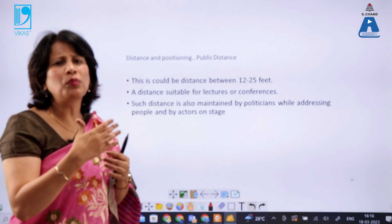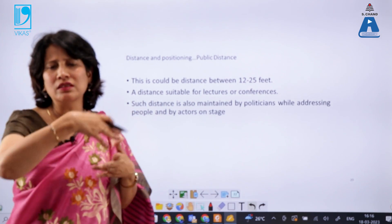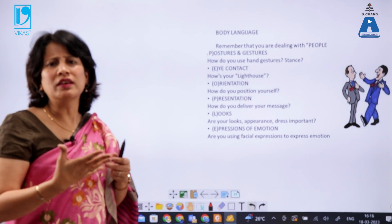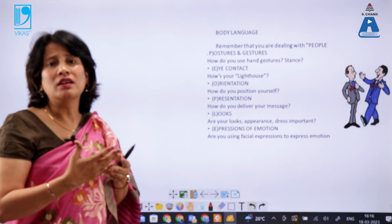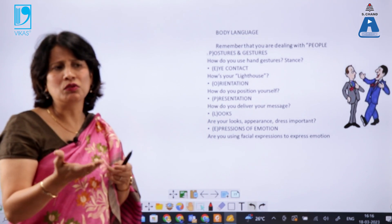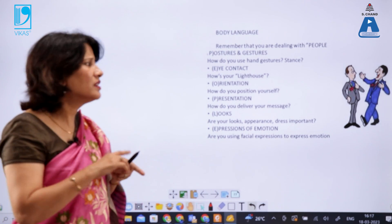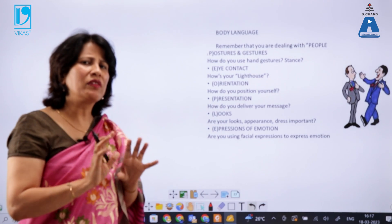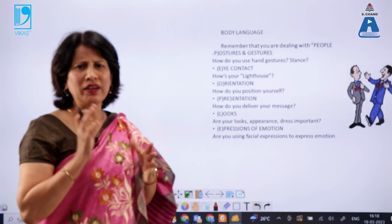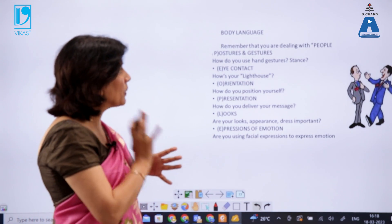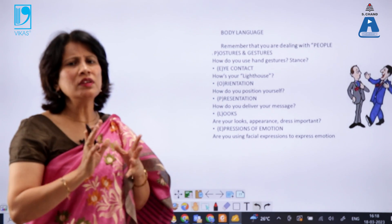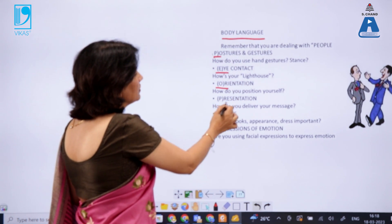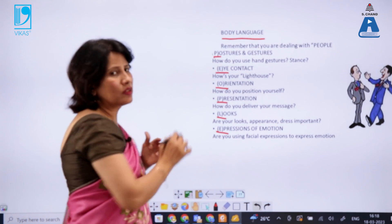Public distance is especially relevant when a politician or performer addresses people from a stage. We need to understand these spaces because at the workplace we may unintentionally occupy certain spaces that send the wrong message. Being careful about space communicates professionalism and positive intent. Professionally, when dealing with people, it's all about body language — posture, eye contact, orientation, presentation, looks, and expressions of emotion are all very important.